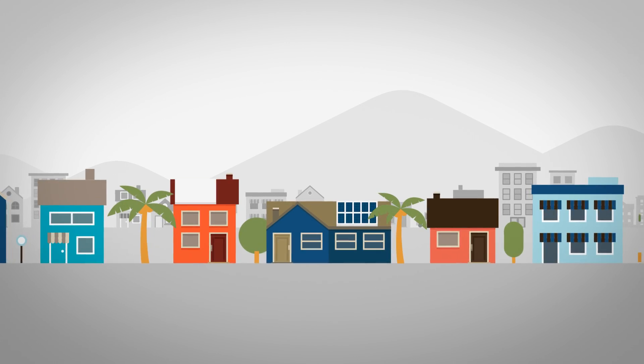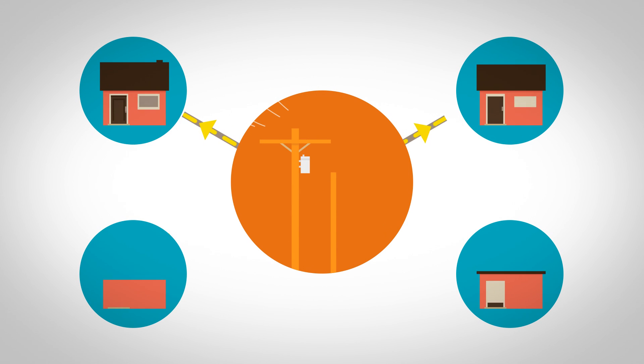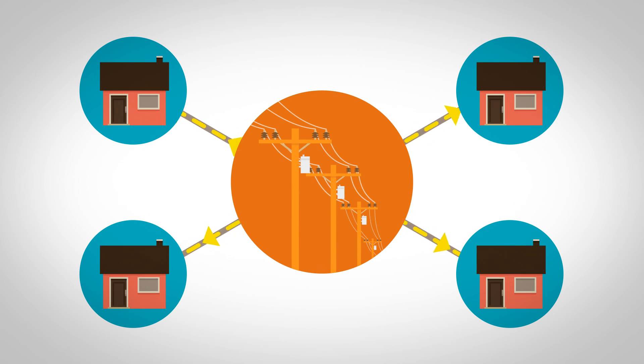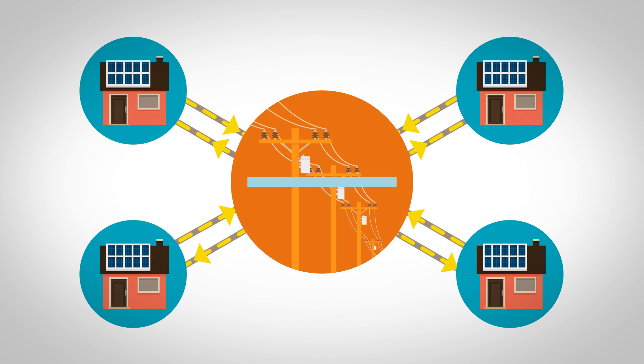Hawaii is first in the nation for rooftop solar systems per customer. To integrate all this clean renewable energy, our electric grid now has to operate as a two-way system instead of a one-way system.